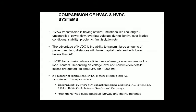Examples include undersea cables, where high capacitance causes additional AC losses. The AC transmission system has inductance and capacitance in the wire carrying the current, but DC conductors are free from these. For example, the 250 km Baltic cable between Sweden and Germany, and the 600 km NorNed cable between Norway and the Netherlands use HVDC. HVDC also enables long-distance power transmission without intermediate substations, for example in remote areas.